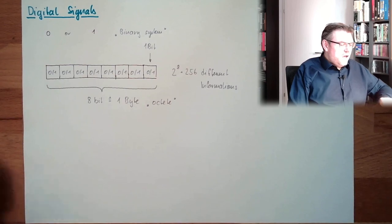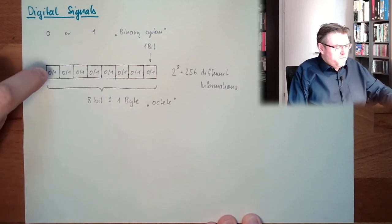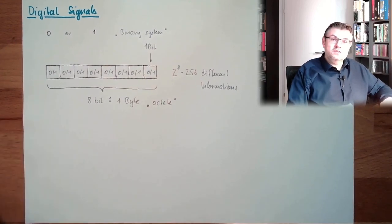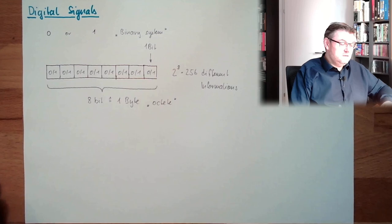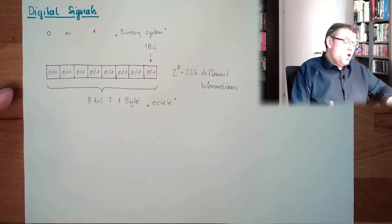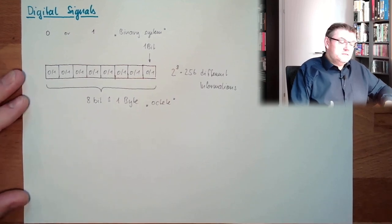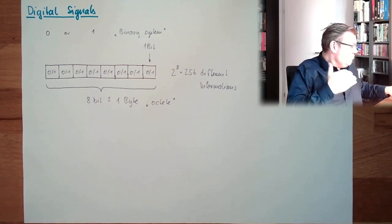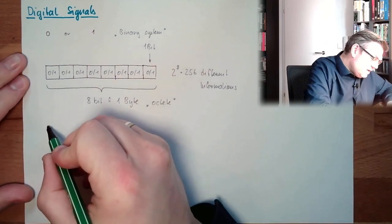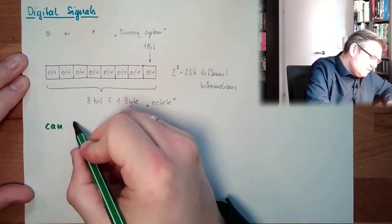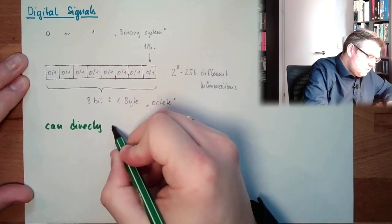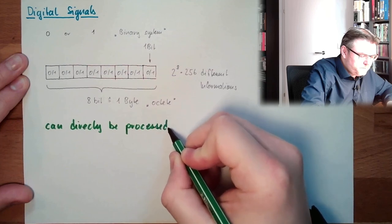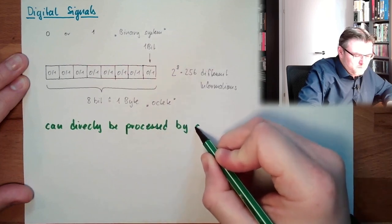Digital signals. And now, I only have to transfer 8 times a different situation, 0, which can be distinguished very easy, and on the other side, I receive this. So, this can be directly read by computers. This thing can directly be read, be processed by computers.